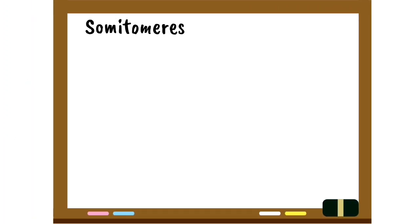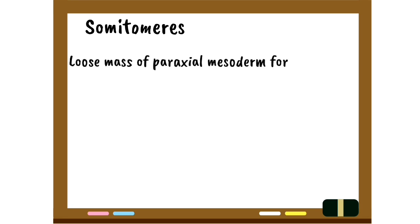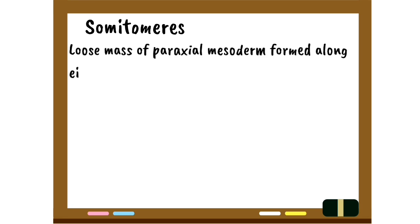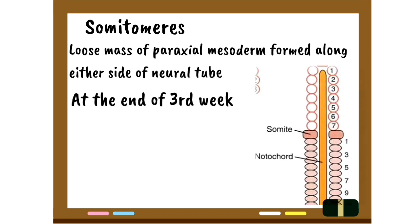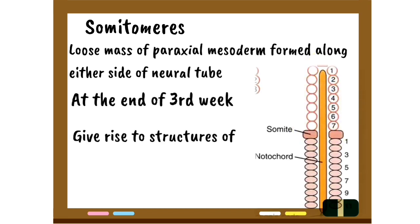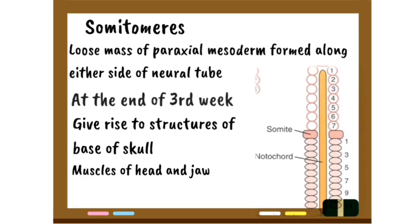Somitomeres are the loose masses of paraxial mesoderm formed along each side of the neural tube at the end of the third week. They lie in the head region as rounded structures and give rise to the structures at the base of the skull and also the muscles of the head and jaw region.